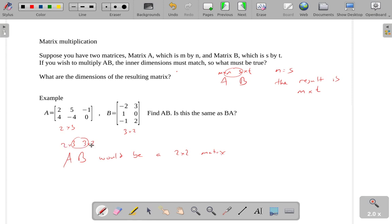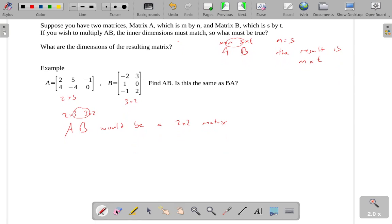So the inner dimensions match. The result would be the size of the outer dimensions. I'll go ahead and actually do this on the calculator in just a second. But before I do that, let's consider AB.